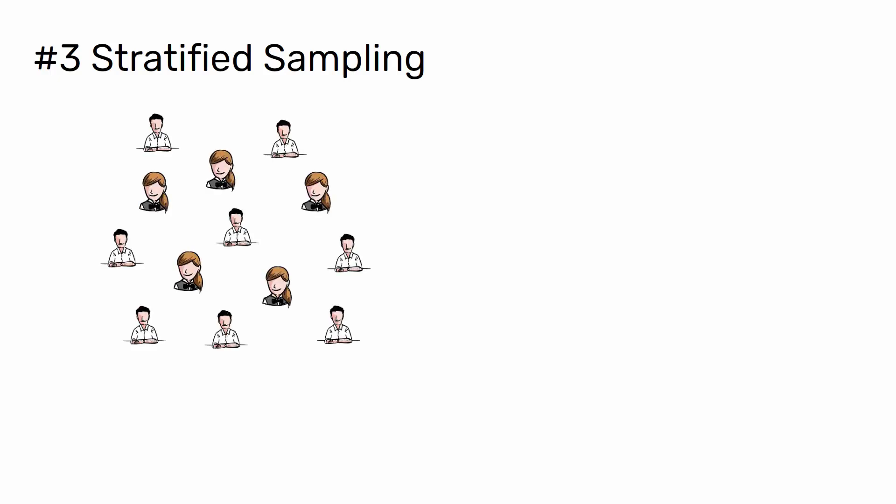3. Stratified sampling. Stratified sampling is a great way to make sure you have a representative sample of the population. This makes it possible to draw more solid conclusions by including everyone, no matter their background.